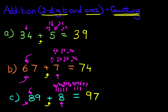If you got that, great. If you didn't, go through it again. OK? Practice. That's what this is all about. Practice, practice. And that is how we do addition of two-digit numbers and ones by counting.